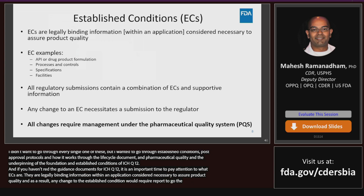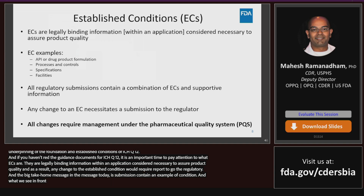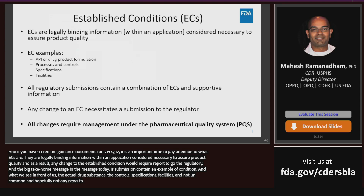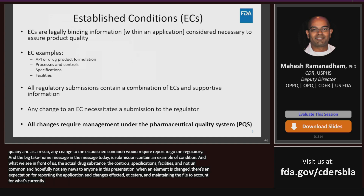The big take-home message here is to recognize that an application today is a mixture of established conditions and supportive information. Examples of established conditions include the actual drug substance, the drug product formulation, the manufacturing processing and its controls, the specifications, the facilities, etc. When these elements are changed, there is an expectation for reporting to the application — whether it's a prior approval supplement or changes being effected — maintaining the file to account for what's currently going on in these areas.